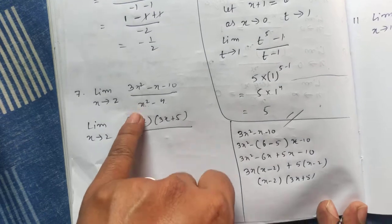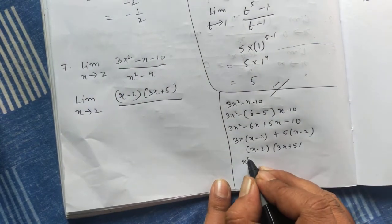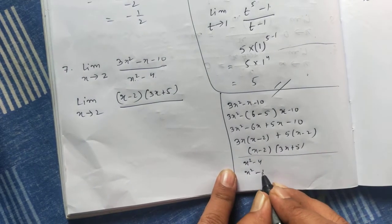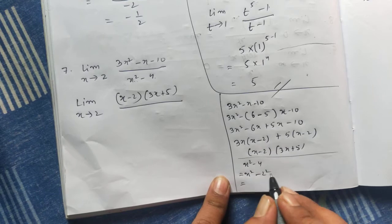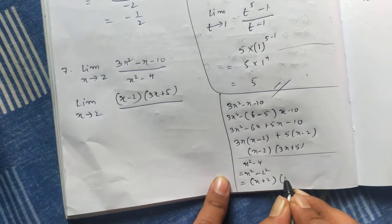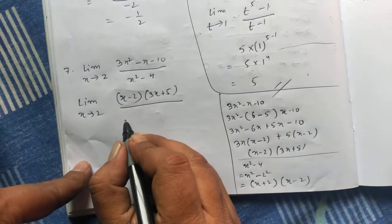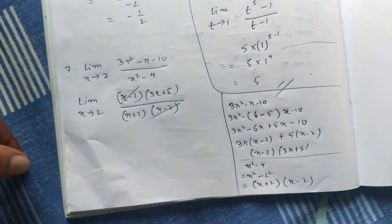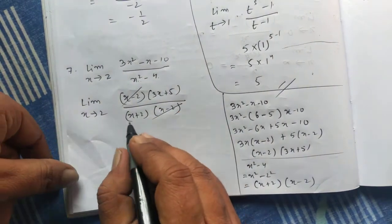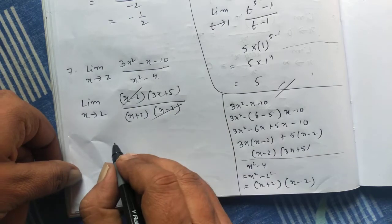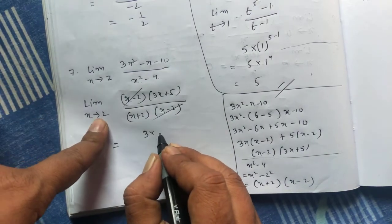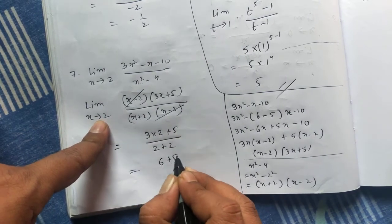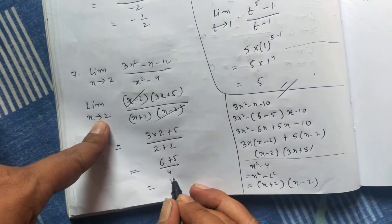And if we factorize x² − 4, we write x² − 2², which is in the form a² − b², so the formula gives (x + 2)(x − 2). We cancel (x − 2). Now if we put the value 2, it won't become 0, so we can put 2 directly. We get 3(2) + 5 over 2 + 2, giving (6 + 5) / 4 = 11/4.